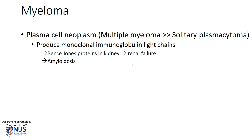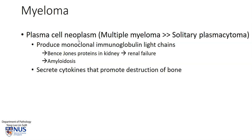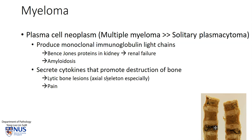Hence, it can lead to renal failure. There can also be amyloidosis as a result of the deposition of these abnormal proteins. Within the bone marrow, which is where most of these tumors are located, the neoplastic plasma cells secrete cytokines, which then promote the destruction of bone.